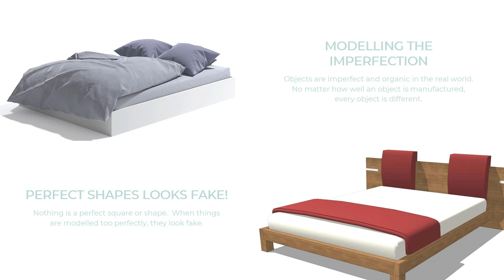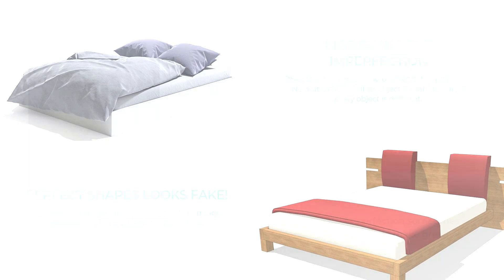If you compare the two models shown here, you can easily tell which one looks more photorealistic. The first one looks organic and imperfect — the shapes are not pure shapes, which gives the impression of a photorealistic model. Apart from downloading good models, I'll also teach you how to use chamfering so that edges are smooth, since most things in real life don't have a 90-degree angle on their edges.